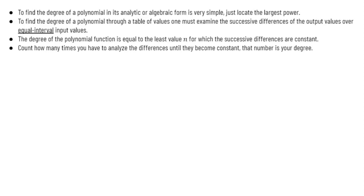If we have a table in front of us, first the input values — the x's — must be at equal intervals: 2, 4, 6, 8 or 3, 6, 9 — you just go by the same value. It could be two, one, or three, but we need equal-sized intervals. Then we examine the successive differences of the outputs. The degree of the polynomial function is equal to the least value n for which the successive differences are constant. We count how many times we have to analyze the differences until they become constant — that number is our degree.